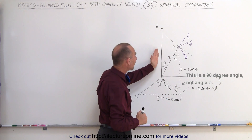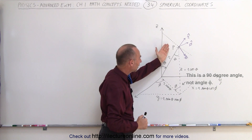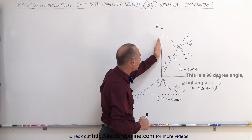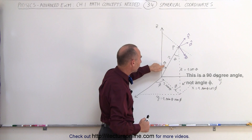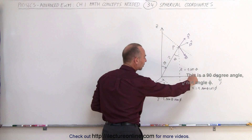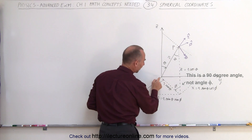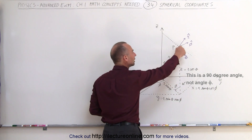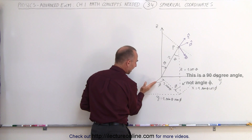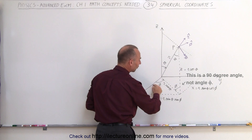Theta is the angle we get when we take the z-axis and drop a line straight down to where the position vector is. The angle between the z-axis and the position vector is called the theta angle. The angle of that point on the xy plane relative to the x-axis — drawing a line from the origin to the point directly below point P on the xy plane — the angle from the x-axis to that line is called the phi angle.